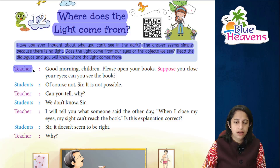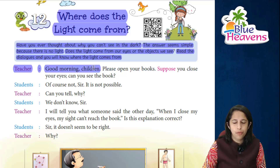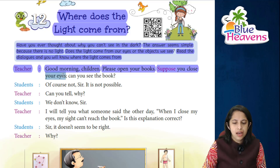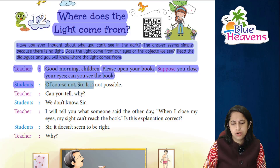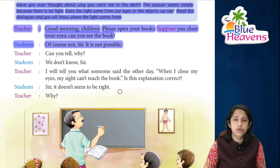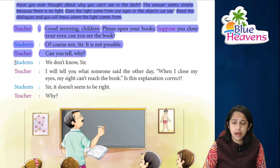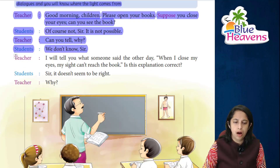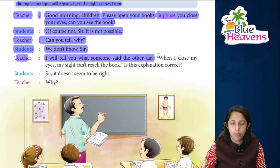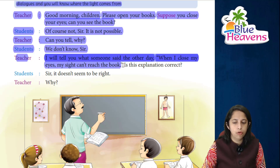The first dialogue is by the teacher, who greets: 'Good morning children, please open your books.' The teacher asks: suppose you close your eyes — can you see the book? Students say: of course not, sir, it's not possible. We won't be able to see while our eyes are closed. The teacher then asks: can you tell why? Students say: we don't know, sir. The teacher says: I'll tell you — when I close my eyes, my sight cannot reach the book.